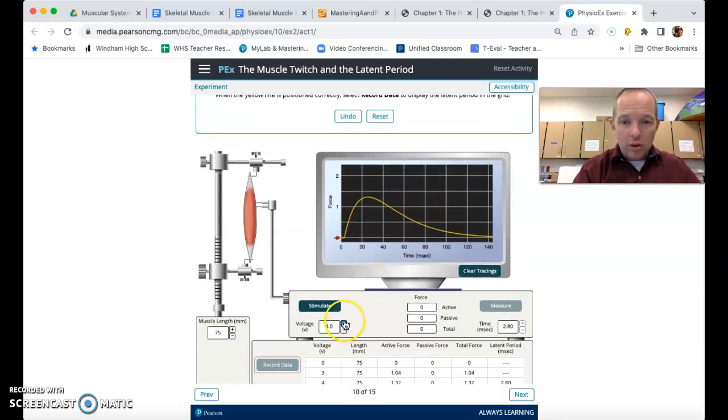So one question that they're going to ask is, as we go, and I'll bump this up to 6. Actually, I'll bump it all the way up to 8. And so what I'm going to do, I'm going to clear these tracings, and we're going to stimulate this again. And we're going to figure out if the latent period changes, if it takes longer to generate more voltage.